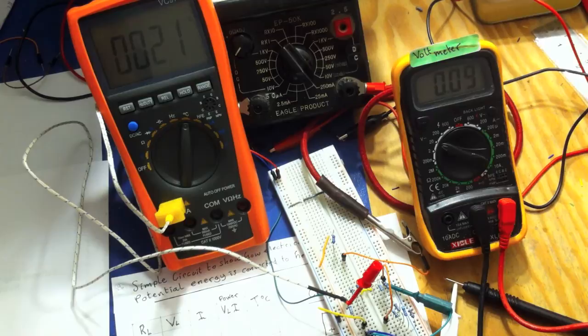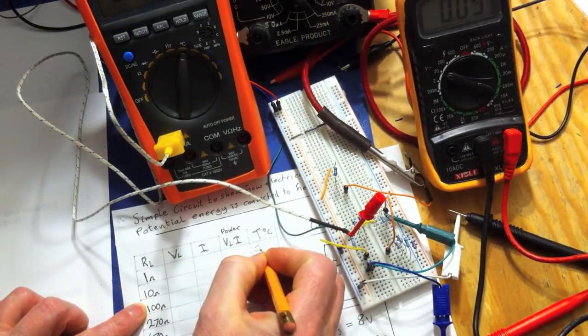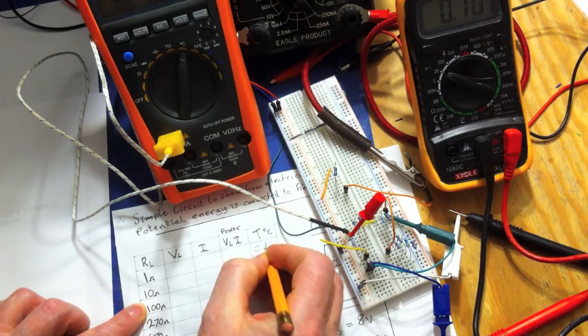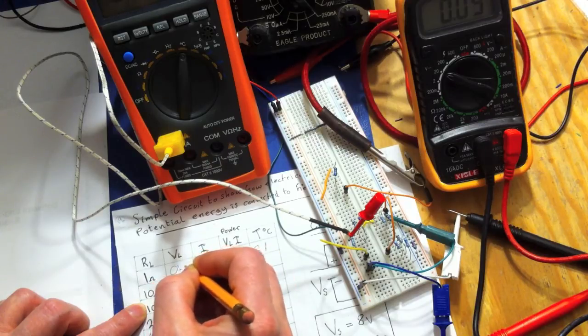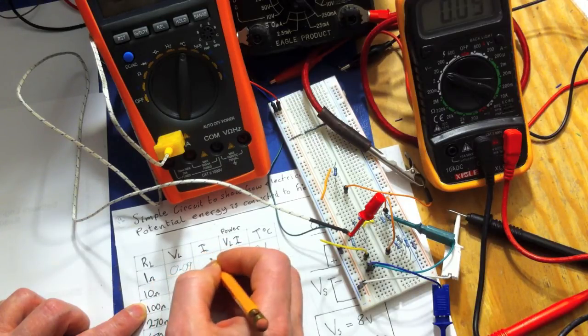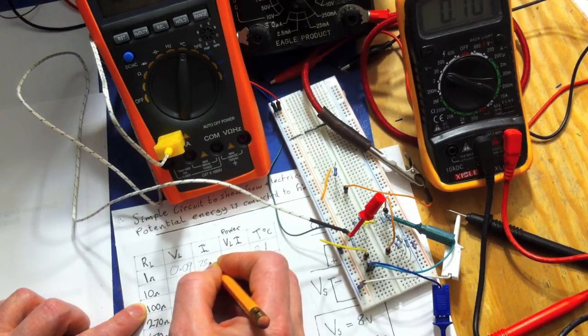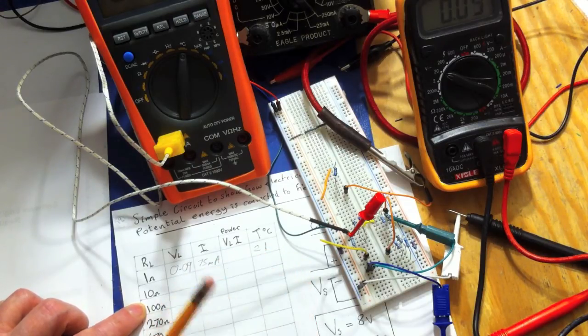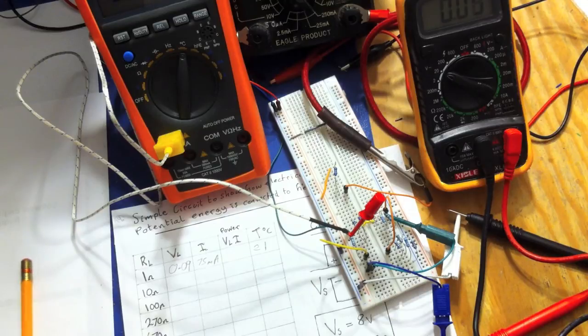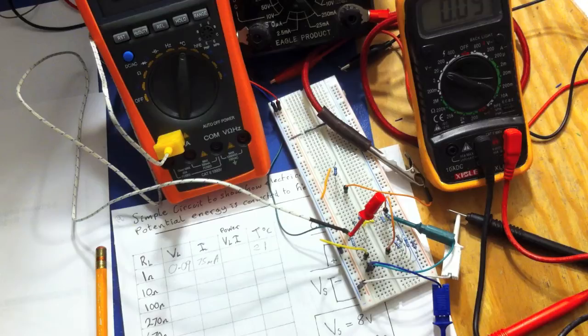So I'm going to write my first entry now as 21 degrees. The voltage is showing 0.9. And the current is showing approximately 75 milliamps. Then I can multiply these together. I'll do that at the end. So I'm just going to go through the experiment now to get all the results down and then I can calculate the power values and then I can plot out all of these values on a graph. So I'm just going to go through them all now.